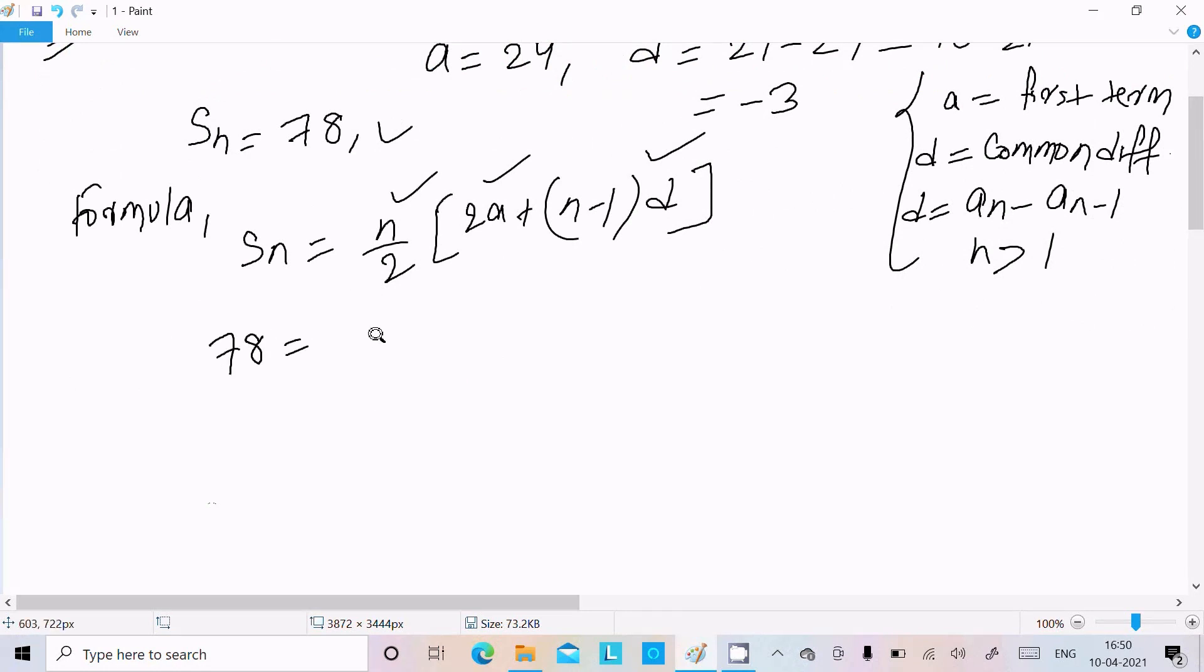78 equals n by 2, and here 2 into a value is 24 and d is minus 3. Now I'm going to do the cross multiplication, so 2 multiply with 78. 78 times 2, that is 48. Now here minus 3 times n, minus 3 times 1, that is 3.